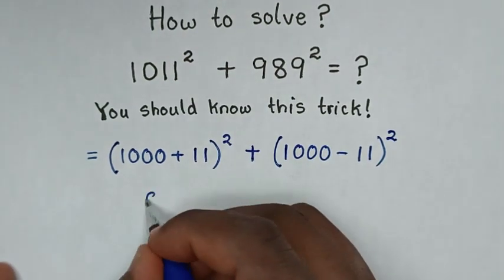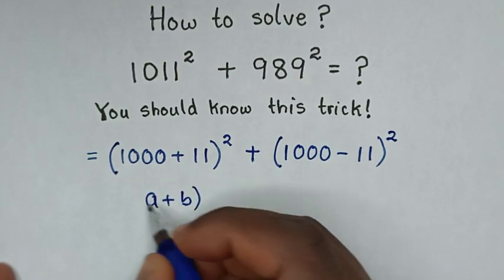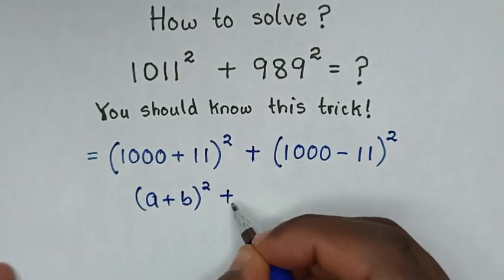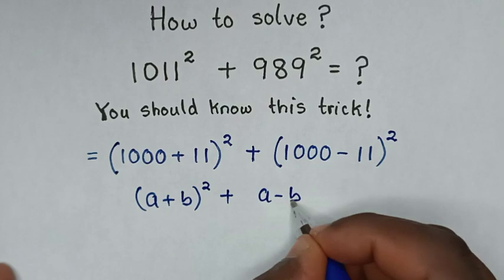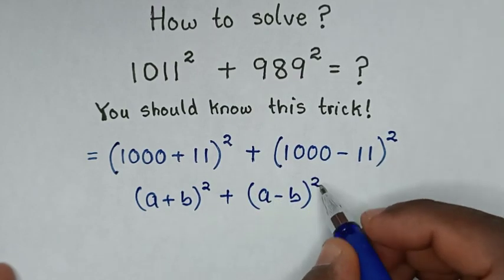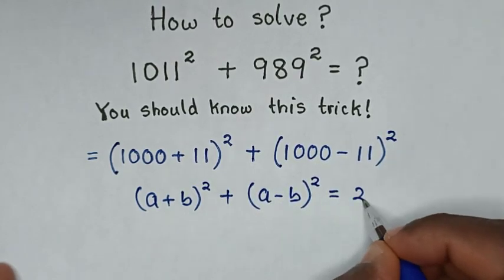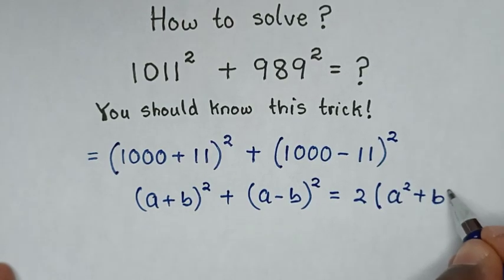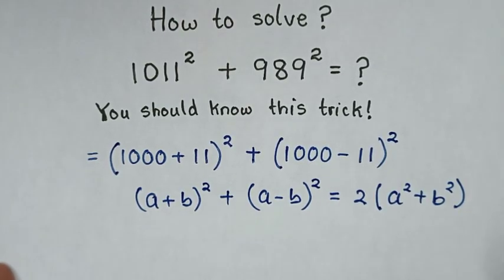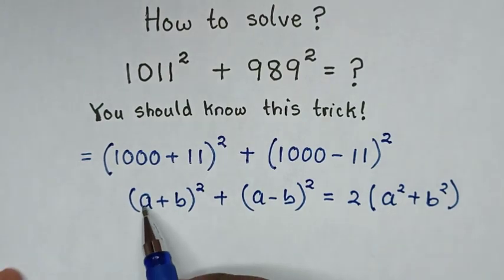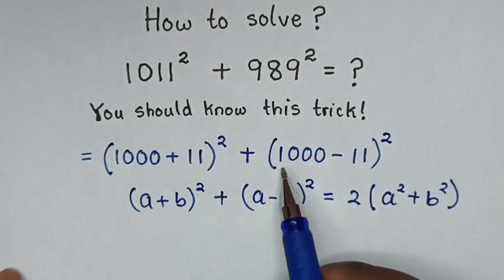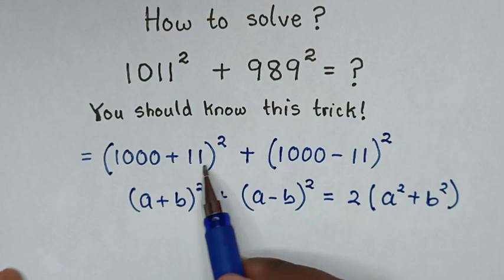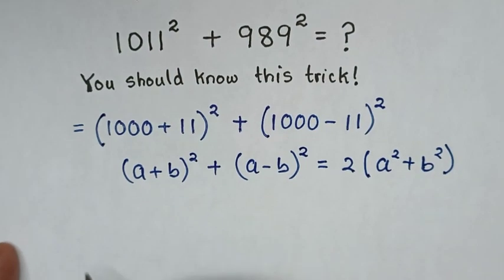Then the next step, from this step it is in the form of the rule a plus b bracket square, then plus a minus b bracket square, which is equal to 2 bracket a square plus b square bracket. Whereas a is 1000 and b is 11.